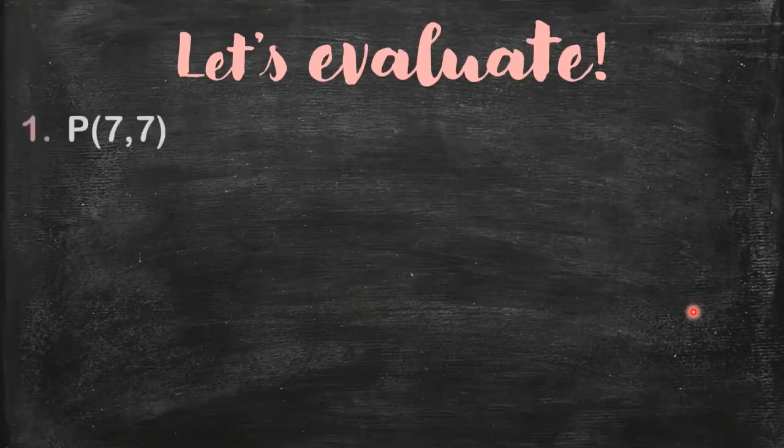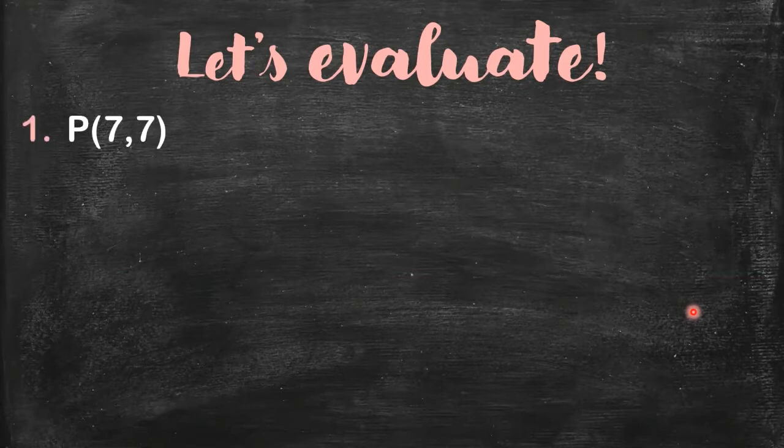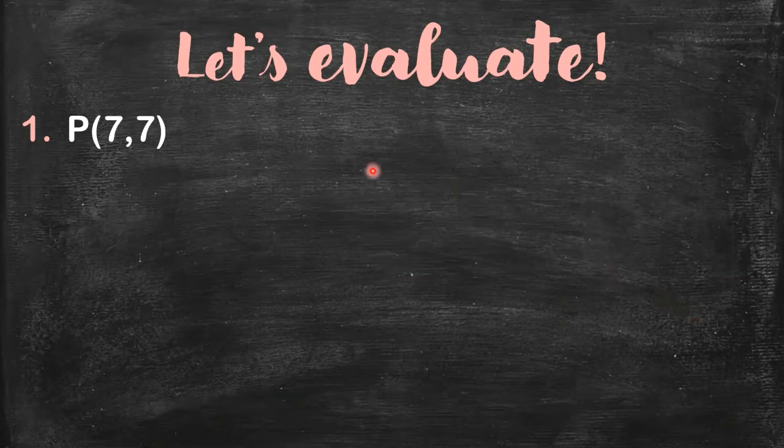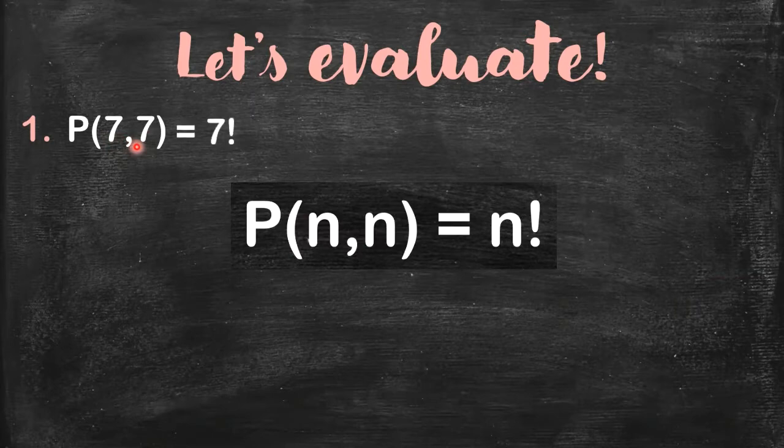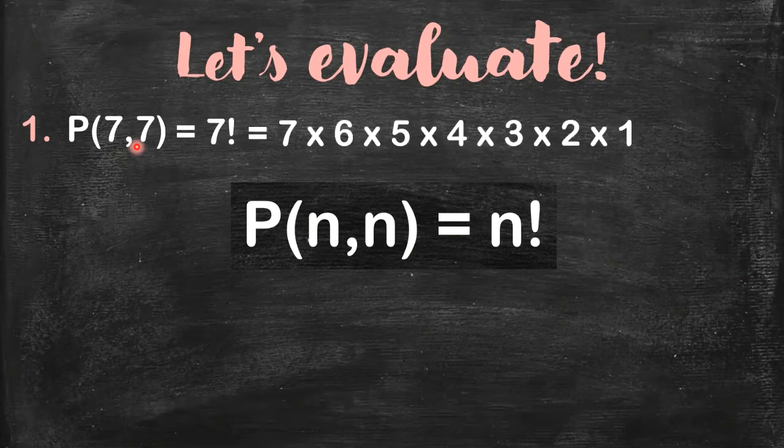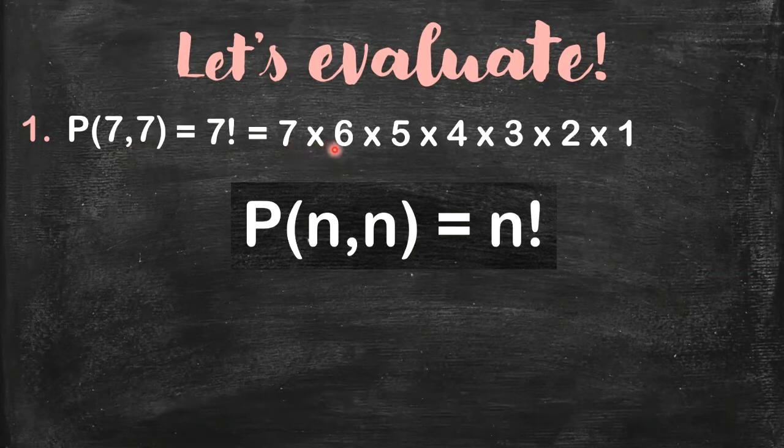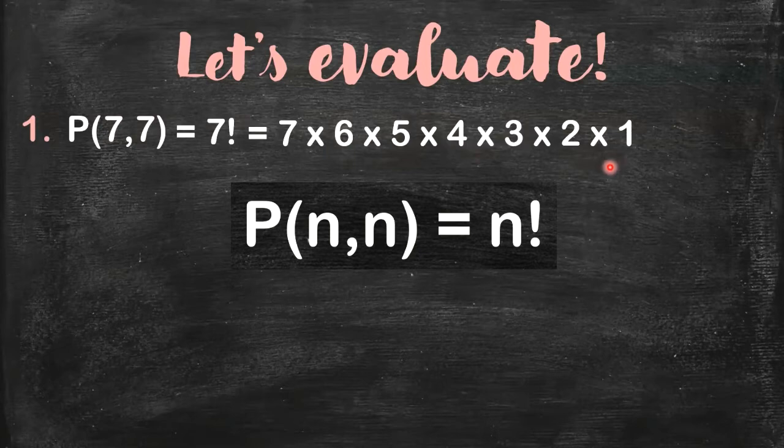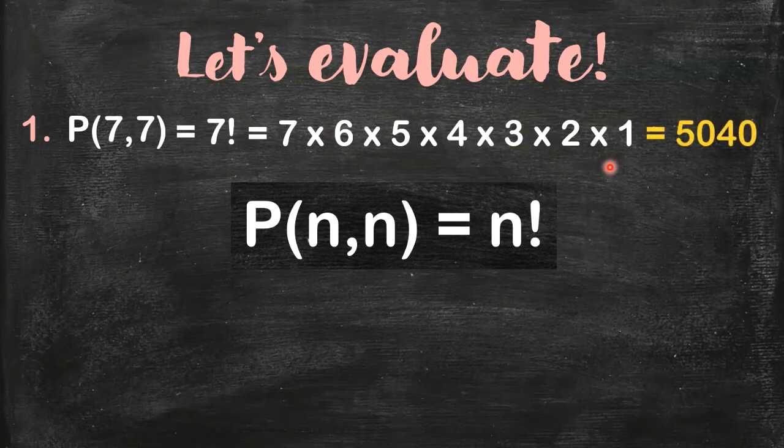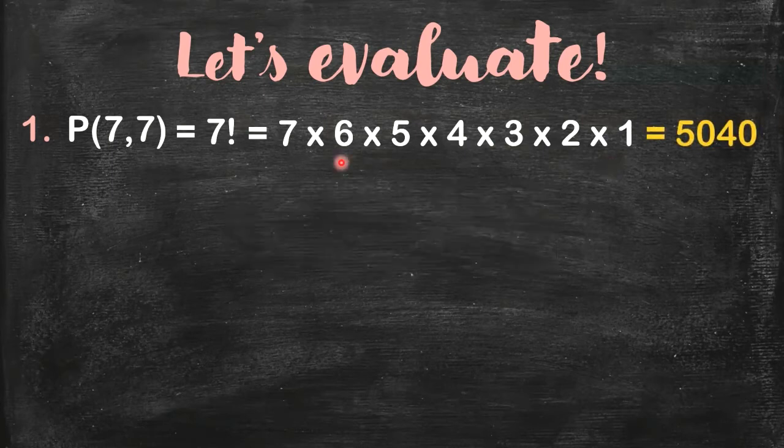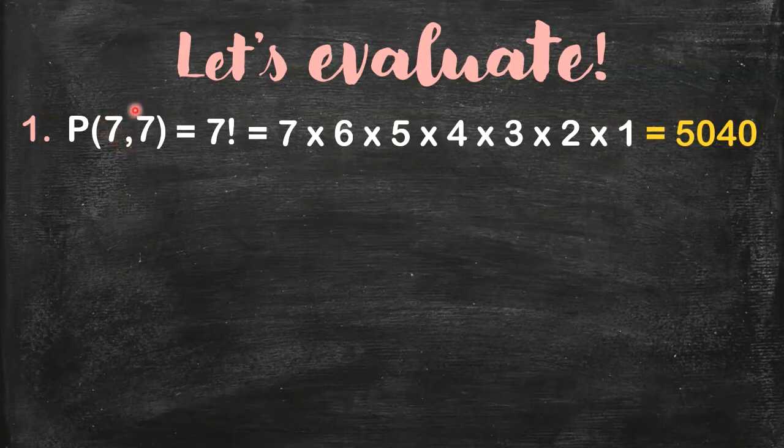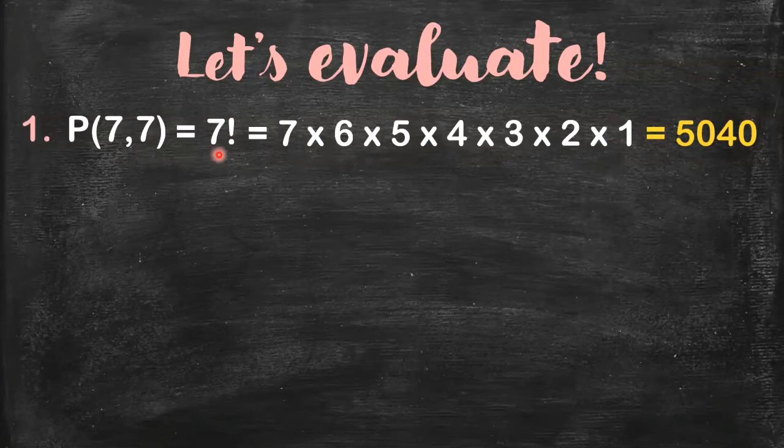Now let's evaluate. What do you mean by P(7,7)? The numbers are the same. So this is just equal to 7 factorial. And what do you mean by 7 factorial? It's the product of decreasing consecutive integers. And then if you do the math, you will get this numerical value, 5,040. So when the numbers are the same, that's all you have to do.